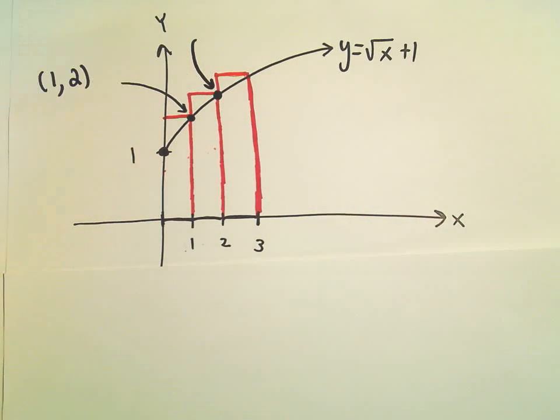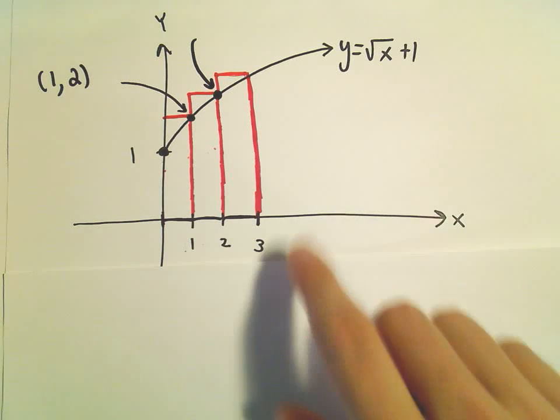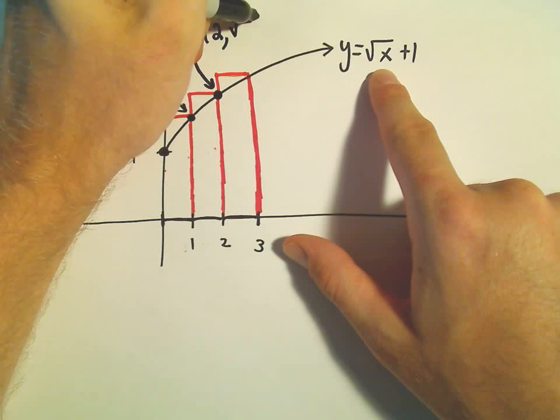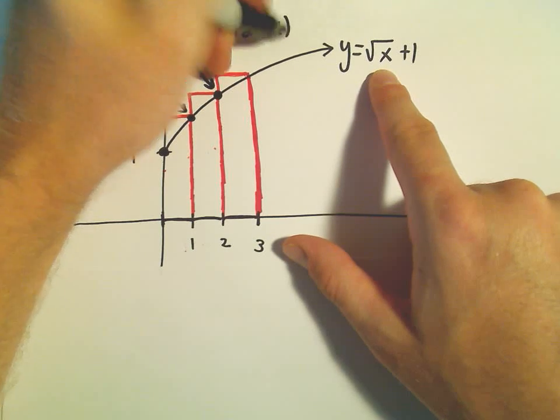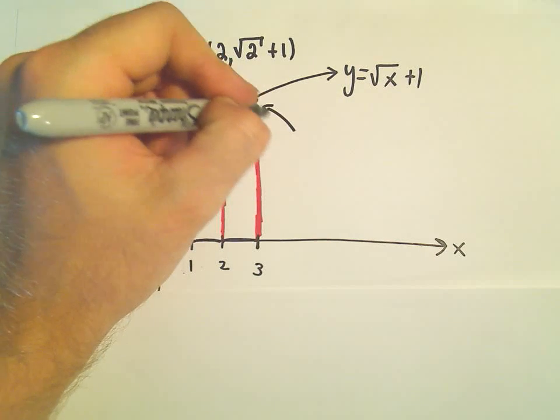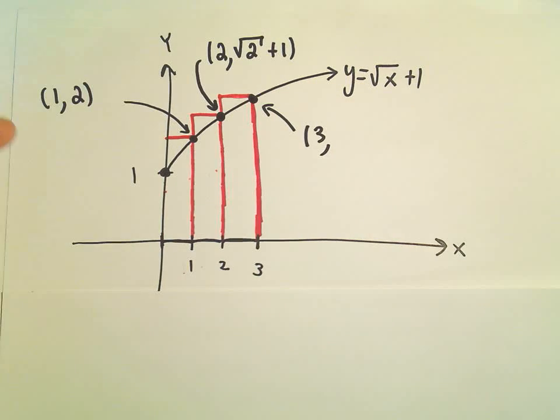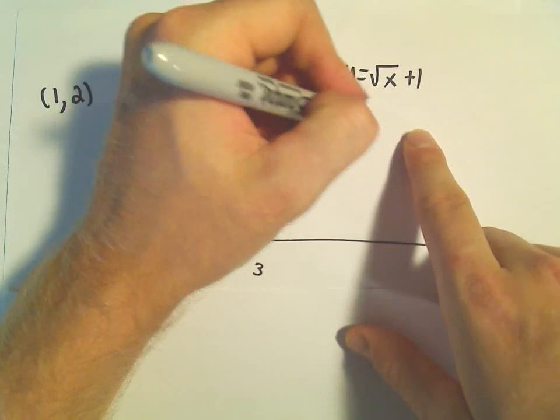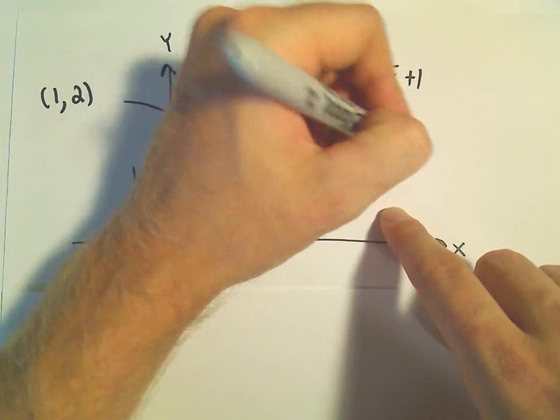If we figure out the coordinates of the second point here, it's got the x coordinate 2, and then the y value would be square root of 2 plus 1. And then the third point would have an x coordinate of 3, and the y value would be square root of 3 plus 1.